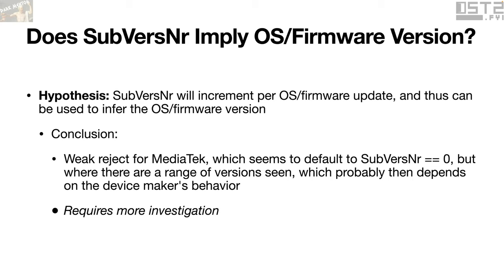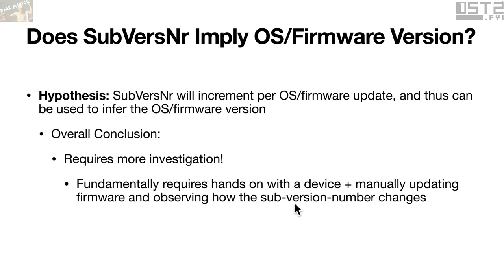For other vendors, basically more information is needed. For MediaTek, for instance, the sub-version number was very commonly zero, but there were also a bunch of different values that looked like they could be unique. Whether those are different firmware versions versus silicon, the only way to find out is to get hands on a device, do a firmware update, and see whether version numbers actually change in the sub-version field — that requires additional investigation I haven't done yet. More broadly, we need to put hands on things to actually determine whether the sub-version number field is being used for firmware or silicon stepping.